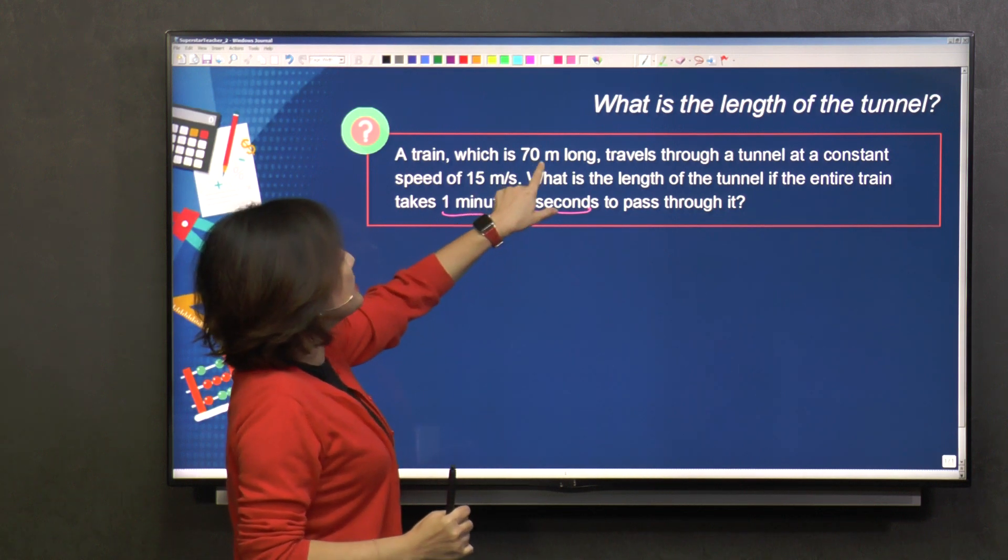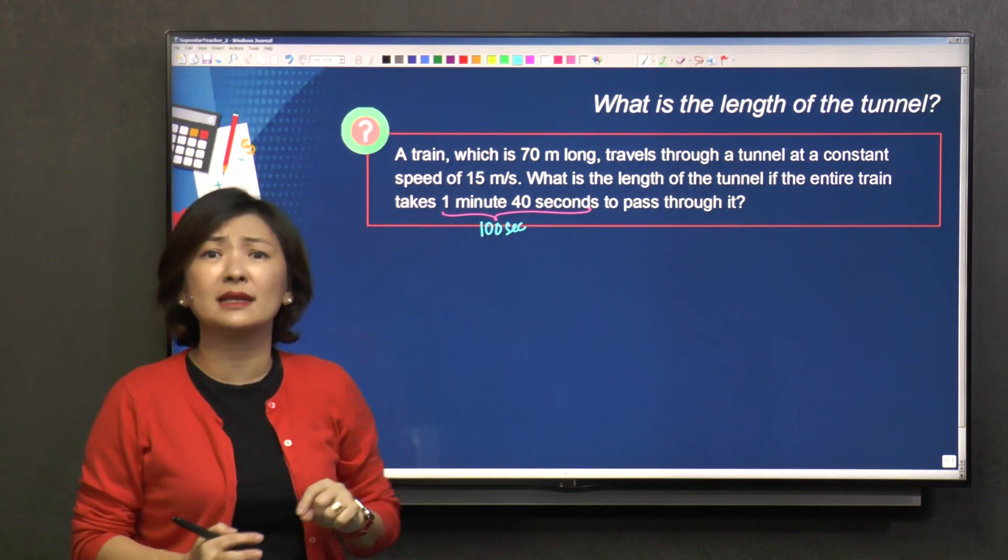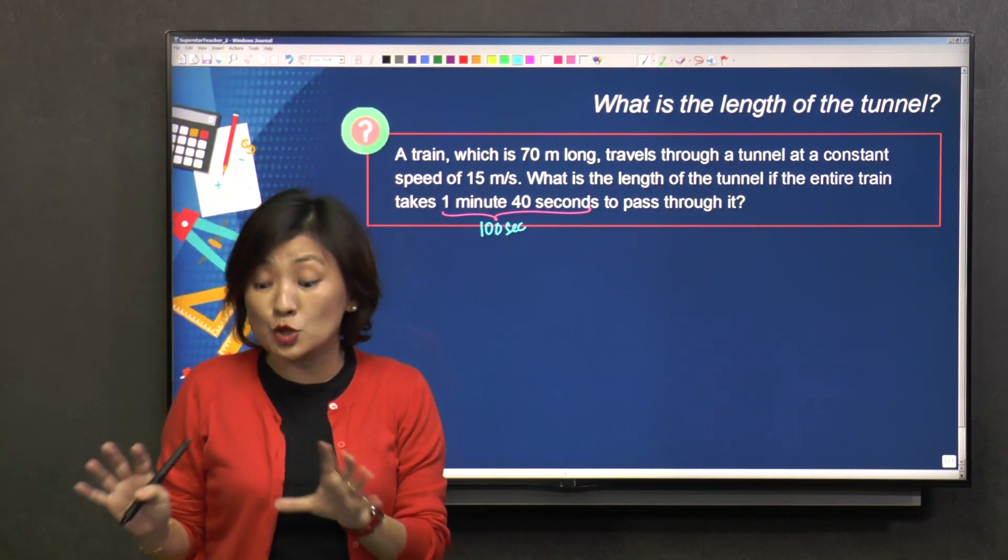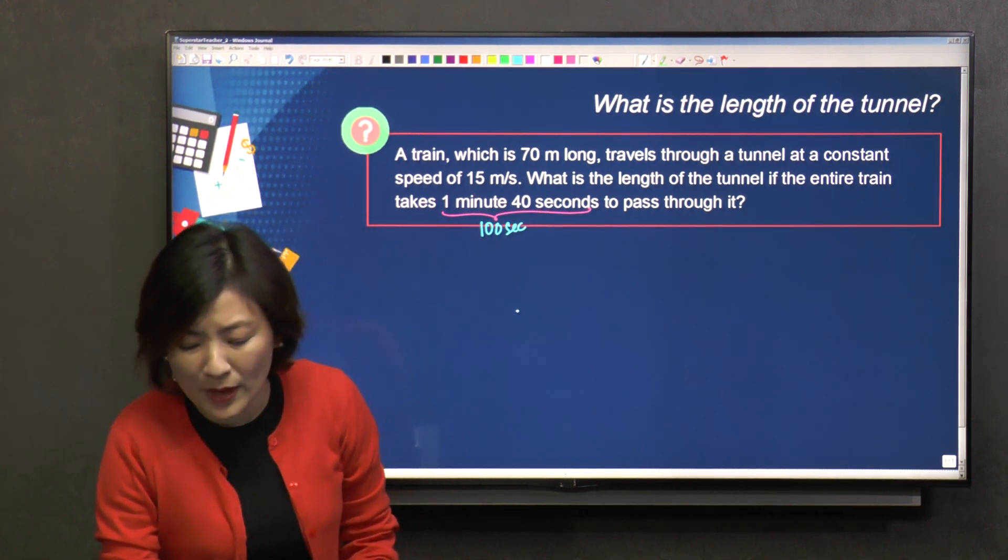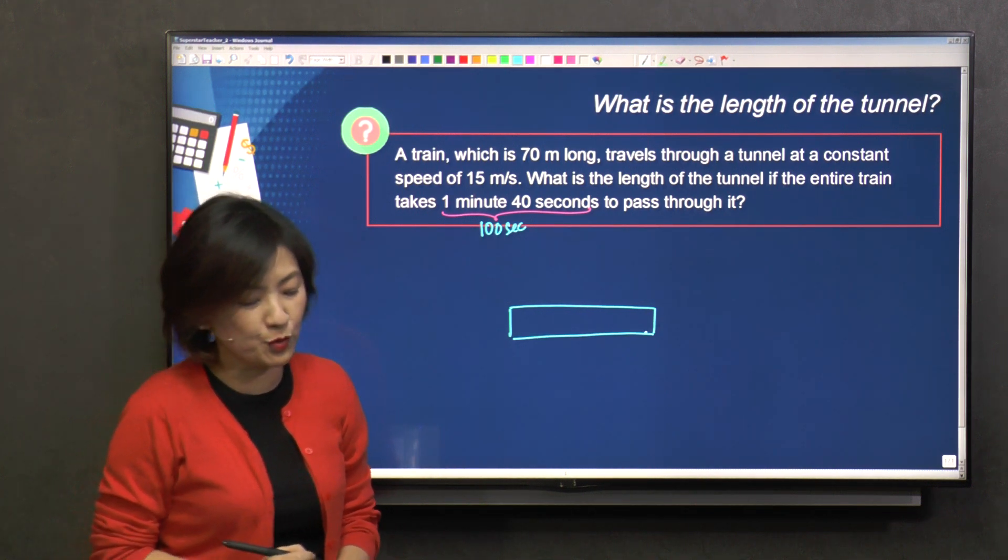Now, they say that it's 70 meters long, that's the train, and then they have the speed, and then we look at the tunnel. Now let me illustrate and draw for you. So we have a tunnel. So this is a tunnel, very beautiful tunnel.